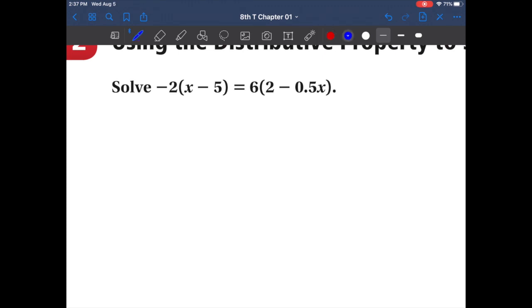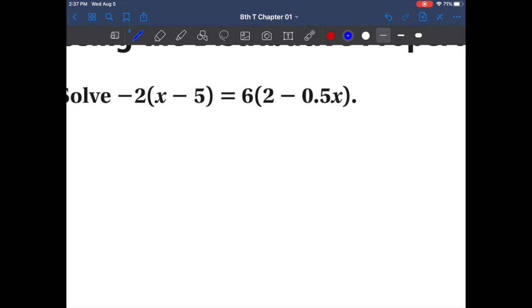In example 2, it looks like we need to do some distributing. Remember I like to use the term rainbow method, so I'm going to draw my rainbows first. Let's solve this. What is negative 2 times x? Well that's negative 2x. Remember that's a negative 5. What is negative 2 times negative 5? Well negative times a negative is a positive, so negative 2 times negative 5 is actually positive 10.